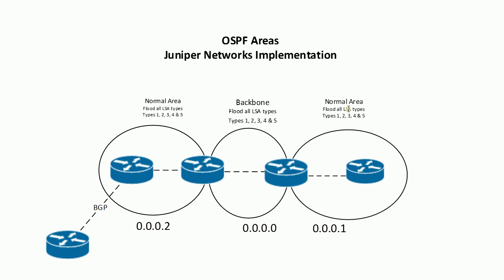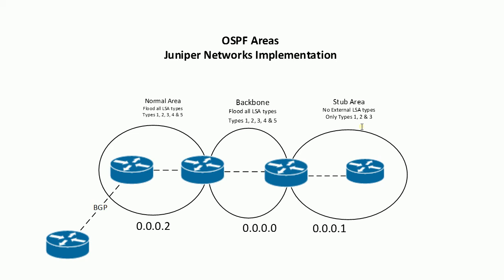For example, if we were to change this area from a standard area into a stub area — we'll talk about what that configuration looks like in part two of this video — we immediately get rid of two types of LSAs that are flooding the network. In addition to that, we only see what's internal to the network as well as summary routes coming from other areas, which really simplifies the overall look of what's happening inside this area.